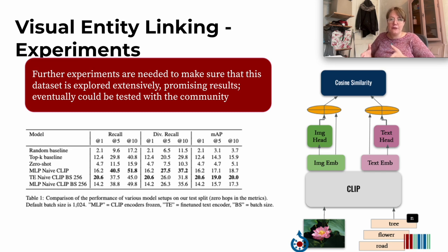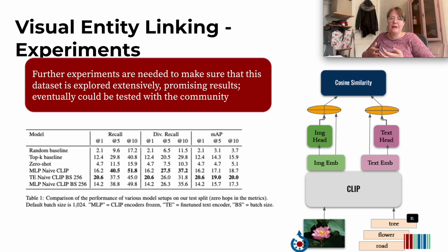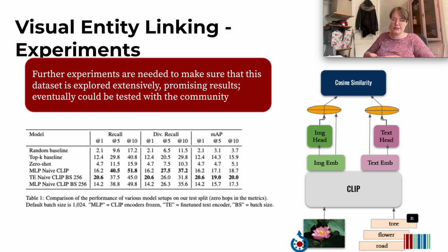We have a short insight into some preliminary experiments. We're working on a larger paper with a larger set of experiments, but this preliminary set already shows that further experiments are needed to make sure the dataset is explored extensively. But we already have some promising results, and the idea would be that eventually this could be useful to enable tools that support the community in finding structured data for the already very large dataset of images.